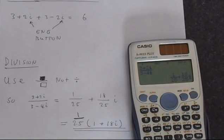And this equals 1 over 25 plus 18 over 25i. It's a perfectly reasonable answer.